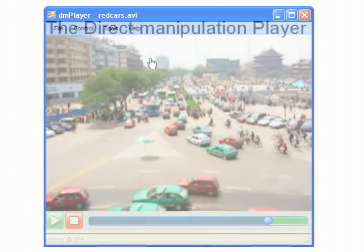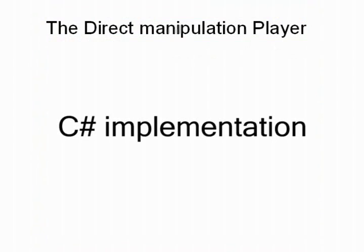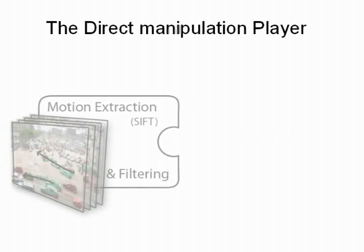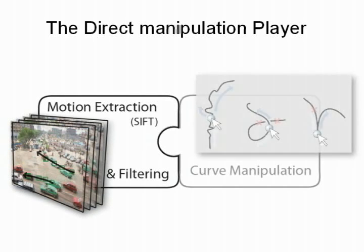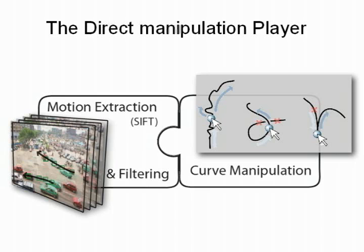We implemented Dimpy using the C-sharp language. Its implementation involved the combination of two main components: a motion extraction and filtering component that populates each video frame with motion curves, and a curve manipulation component that translates a pointer's 2D motions into a location on a motion curve, which in turn corresponds to a particular frame in the video.